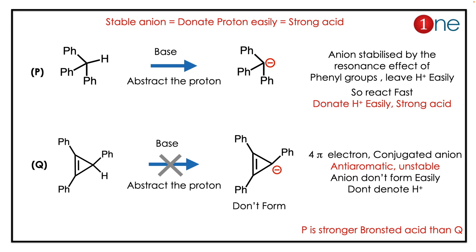Acidity is dictated by the stability of the anion — the more stable the anion, the stronger the acid will be. So let us analyze the anion stability. For both P and Q, after losing the H⁺, you have the corresponding anion.